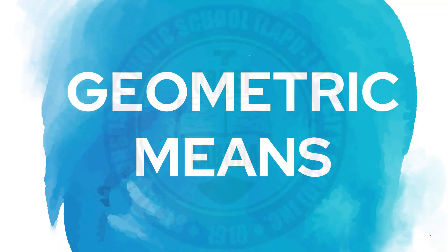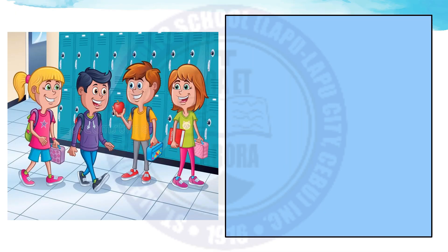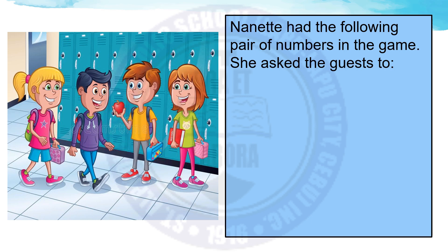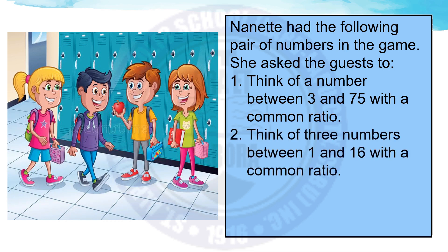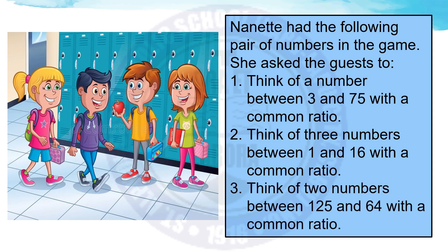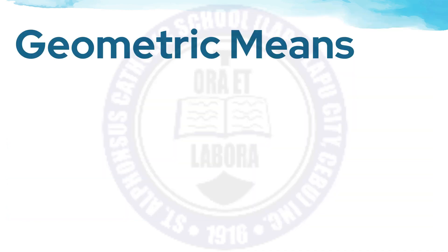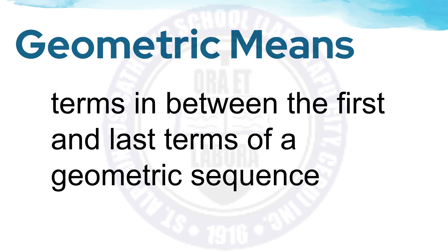Geometric Means. Let us begin with the first problem. Nanette had the following pair of numbers in the game. She asked the guests to: first, think of a number between 3 and 75 with a common ratio; second, think of three numbers between 1 and 16 with a common ratio; and lastly, think of two numbers between 125 and 64 with a common ratio. This problem will lead us to the concept of geometric means — the terms in between the first and last terms of a geometric sequence.